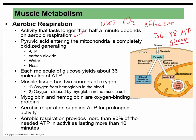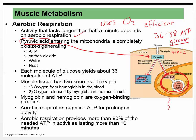In aerobic respiration, the pyruvate produced from glucose — which gave us two ATP — moves into the mitochondria if you have enough oxygen, instead of turning into lactic acid. Inside the mitochondria, pyruvic acid is completely oxidized, generating ATP and the waste products carbon dioxide, water, and heat. That heat is why we can shiver to produce warmth. Each molecule of glucose yields about 36 molecules of ATP through this process.